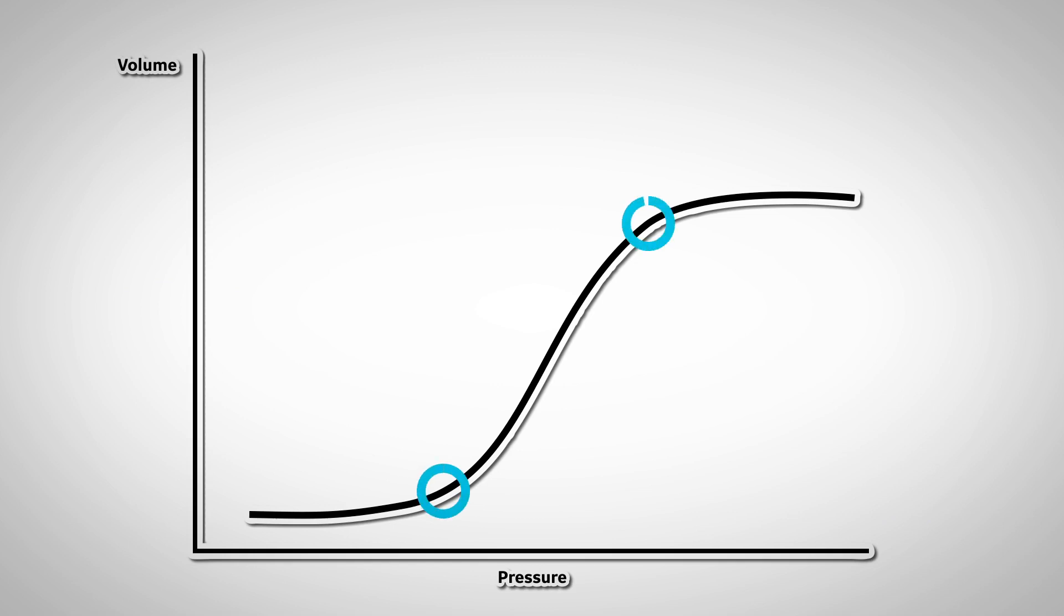There are two important areas to point out on the pressure-volume curve. They are the upper and lower inflection points and can be visualized by the curve's change in direction.